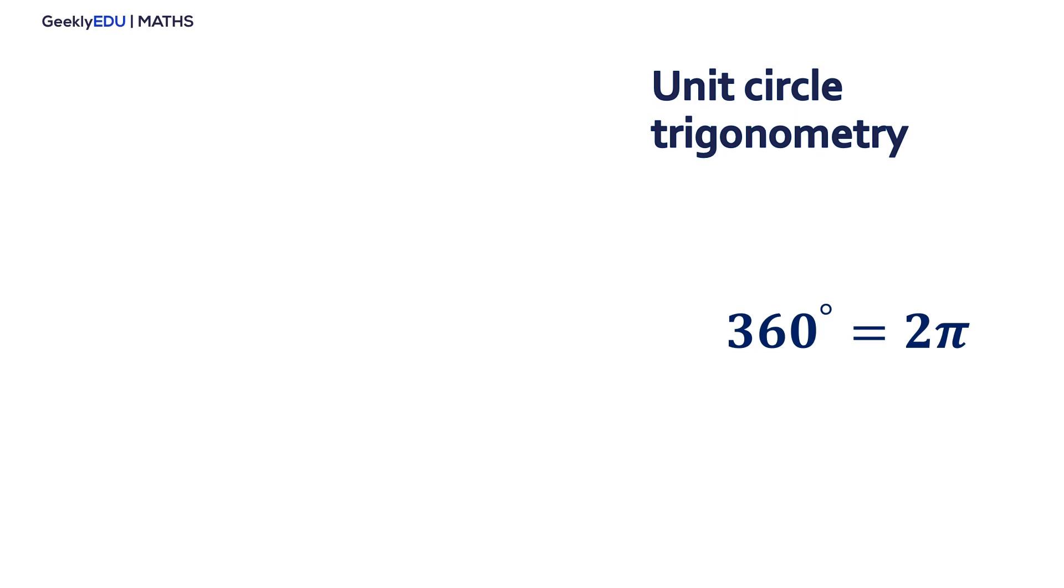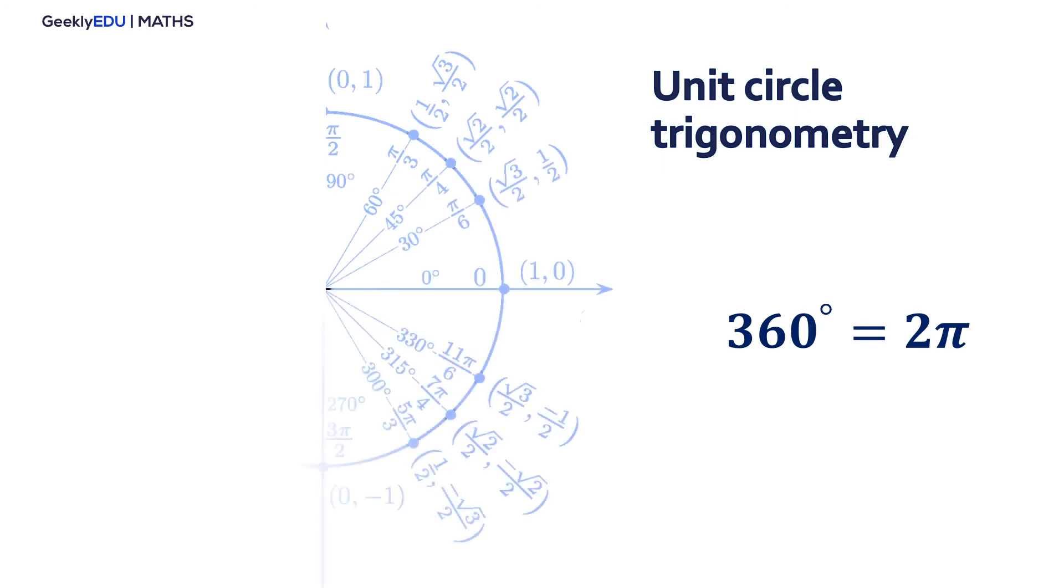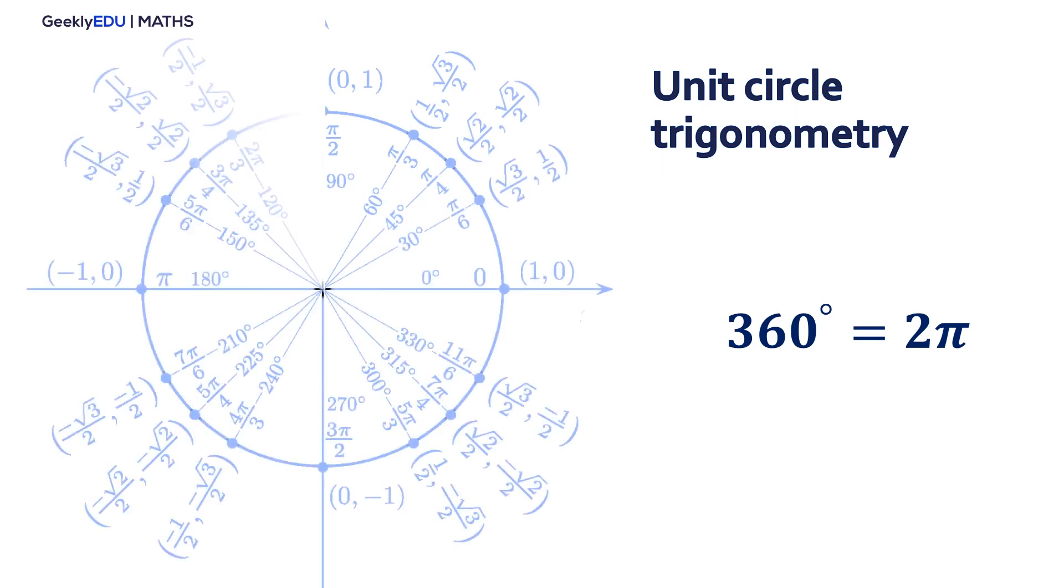When we substitute any angle in the function sine and cosine, we are going to have these numbers. Every time you use sine and cosine functions, you are going to get these same numbers.